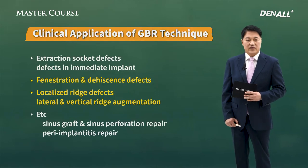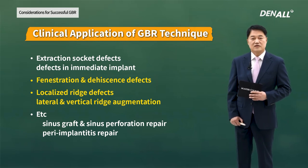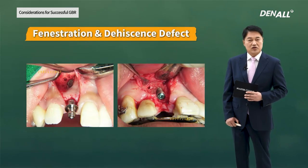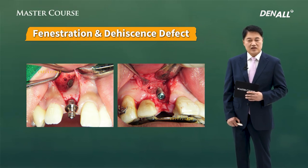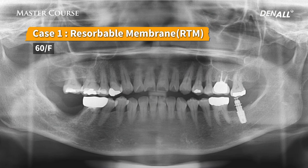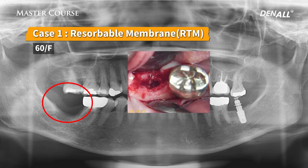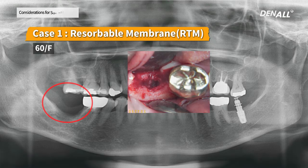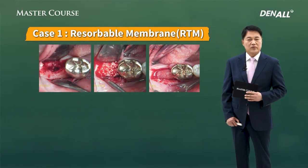I'm going to talk about fenestration, dehiscence defect, and localized ridge defect cases. On the apex you can see there is a defect — this is fenestration defect. The defect on the coronal side is dehiscence defect. The prognosis is better in fenestration defect, and it is more difficult to treat dehiscence defect. A 60-year-old female patient in number 47 — after extraction, bone resorption was severe and it was difficult to place an implant. When I opened the flap, bone defect was severe and vertical augmentation was required. I used Assure Os and then applied a resorbable membrane.